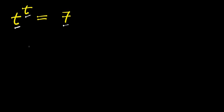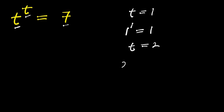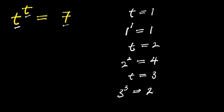So, what are we going to do? Now we can do some testing by equating some values to t. We have t equals 1 — if that is the case, we have 1 to the power of 1, and this is 1. If t equals 2, that means we have 2 to the power of 2, and this equals 4. If t equals 3, that means we have 3 to the power of 3, and this is 27. So, what you can observe from this is that when t is 3,